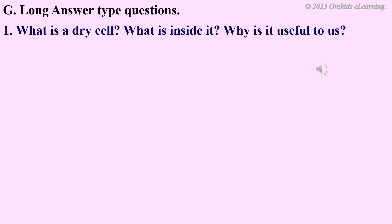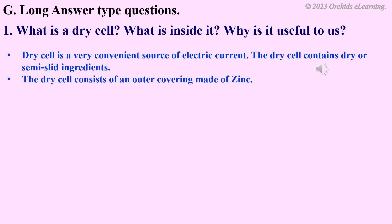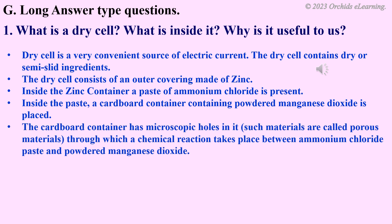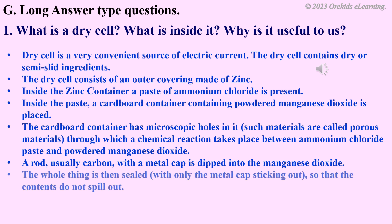What is a dry cell? What is inside it? Why is it useful to us? A dry cell is a very convenient source of electric current. The dry cell contains dry or semi-solid ingredients. It consists of an outer covering made of zinc. Inside the zinc container, a paste of ammonium chloride is present. Inside the paste, a cardboard container containing powdered manganese dioxide is placed. The cardboard container has microscopic holes in it. Such materials are called porous materials, through which a chemical reaction takes place between ammonium chloride paste and powdered manganese dioxide. A rod, usually carbon, with a metal cap is dipped into the manganese dioxide. The whole thing is then sealed so that the contents do not spill out. Dry cells are used in remote controls, toy cars, torches, etc.